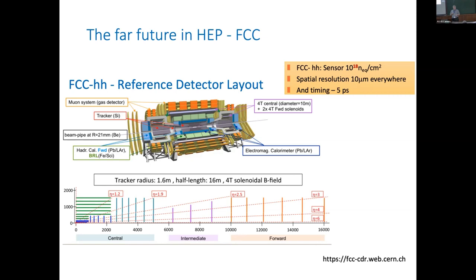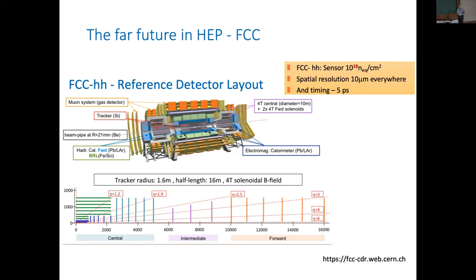On diamonds: everybody believes diamonds are more radiation hard than silicon — it is not true. Maybe a factor of three, not two orders of magnitude. They are more radiation hard only if you measure high-energetic particles. Even at one MeV, they just collapse. I thank you for your attention and explicitly thank you for the invitation to this nice school — I am open for questions.